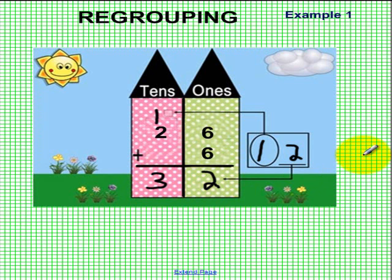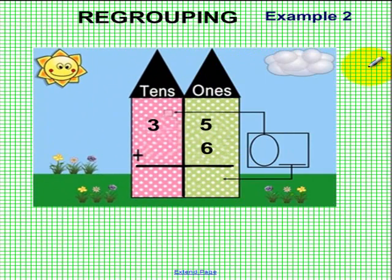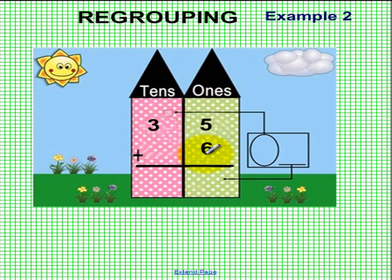Let's show you another example. Okay boys and girls, let's follow along with example two. In the tens house we have one, two, three, and over here we have five, so the first number is 35. What we're going to do is add the number six. Six plus five — if you said eleven, you're right!